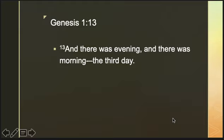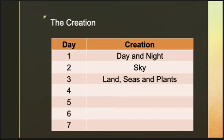We now end the passage with Genesis 1, verse 13, which says: 'And there was evening and there was morning — the third day.' The third set of creations were the land, the seas, and the plants.